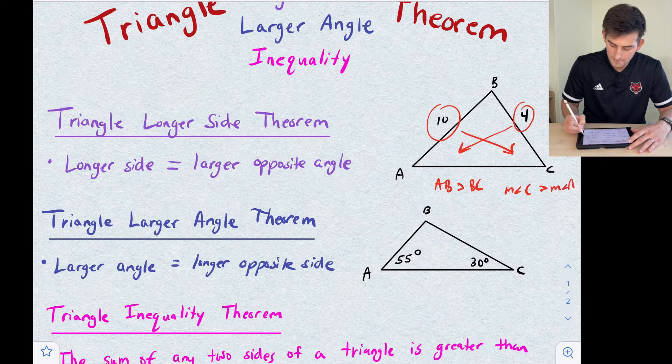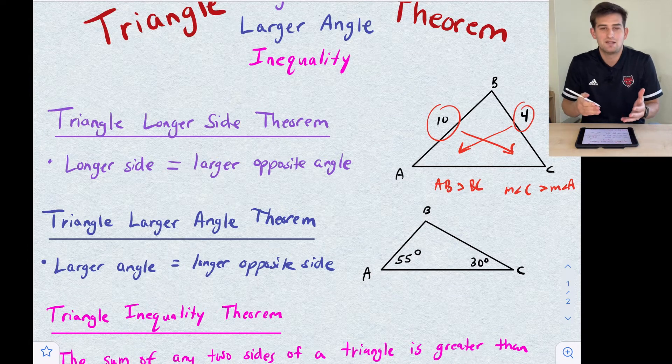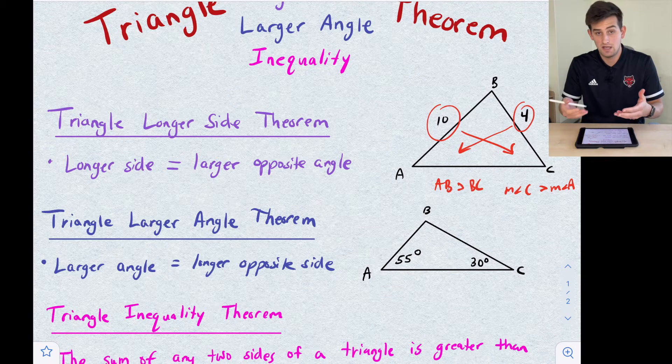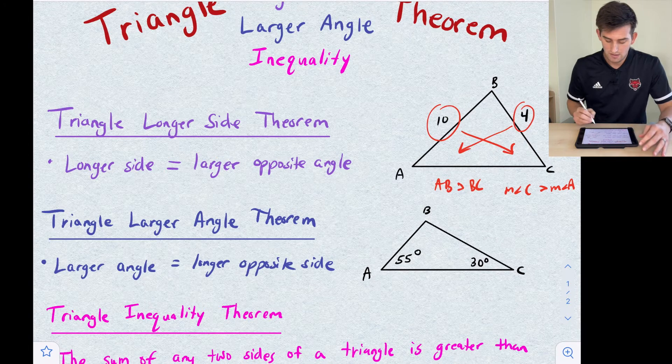Now the Triangle Larger Angle Theorem basically says the same thing, but now we're given the angle measures first. So the larger the angle, the longer the opposite side.